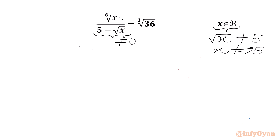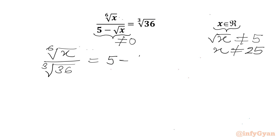Now I will switch the values. So I will write 6th root of x over cube root 36 equal to 5 minus square root x.